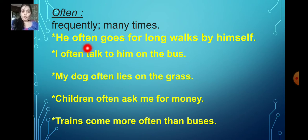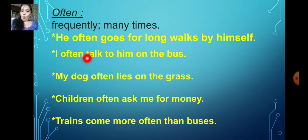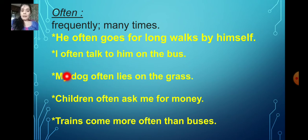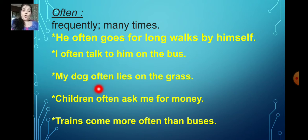He often goes for long walks by himself. Next: I often talk to him on the bus — meaning he has spoken many times. My dog often lies on the grass — so the dog, many times, frequently sleeps on the grass. 'Lies' means sleeps.